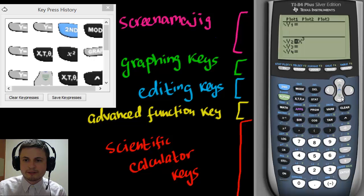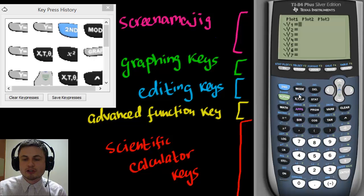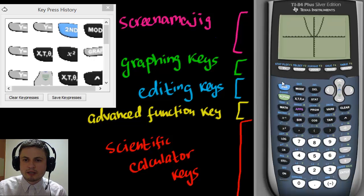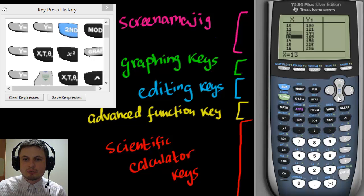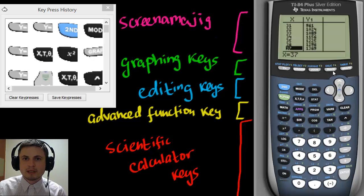If you want to clear a function, press the Clear button and you can erase everything. Now let's try something a bit more complex — plot the quadratic function and look at some values. If you click Second then Graph, you get the table, which gives you x and y values. For example, at x equals 10, y is 100; at x equals 20, y is 400.